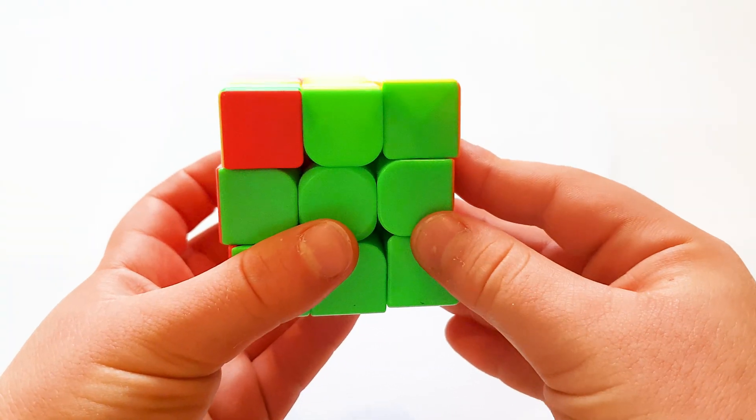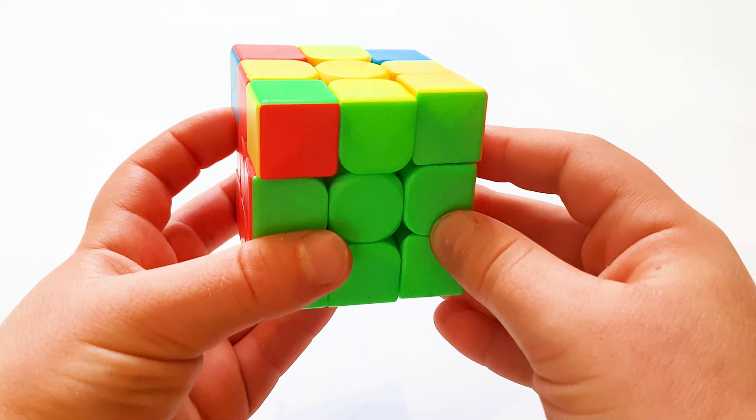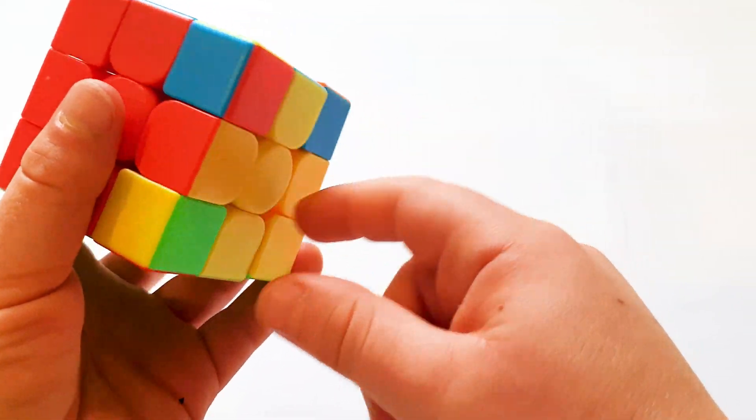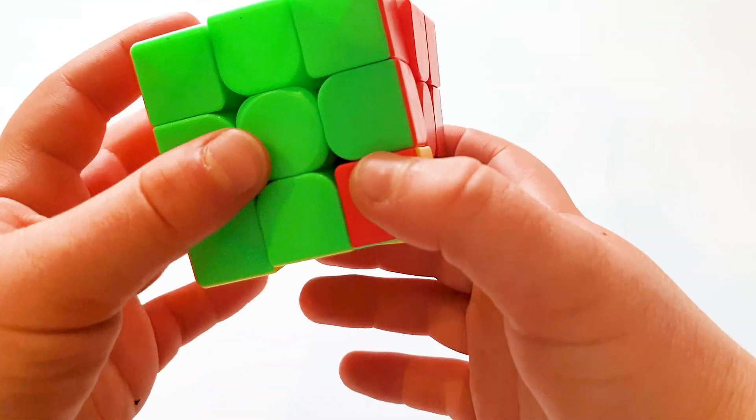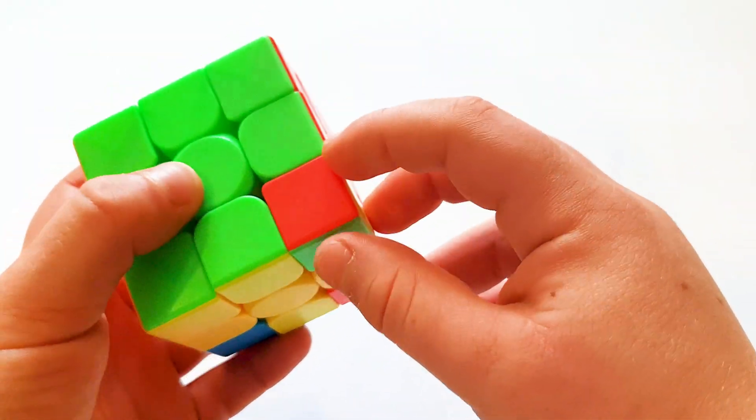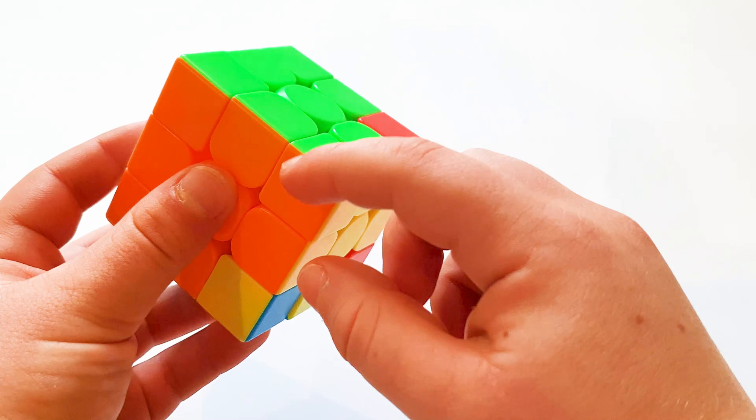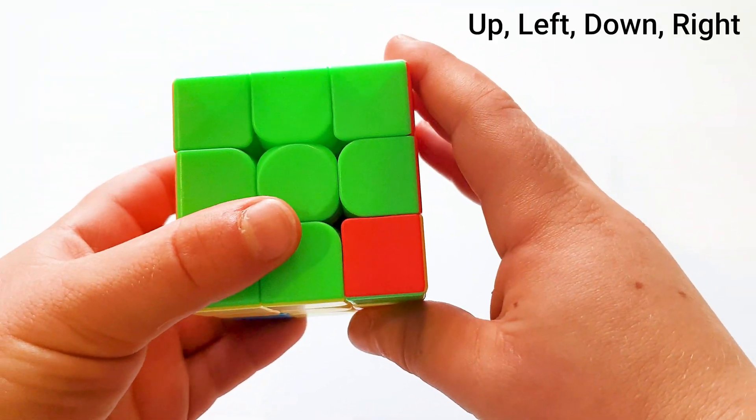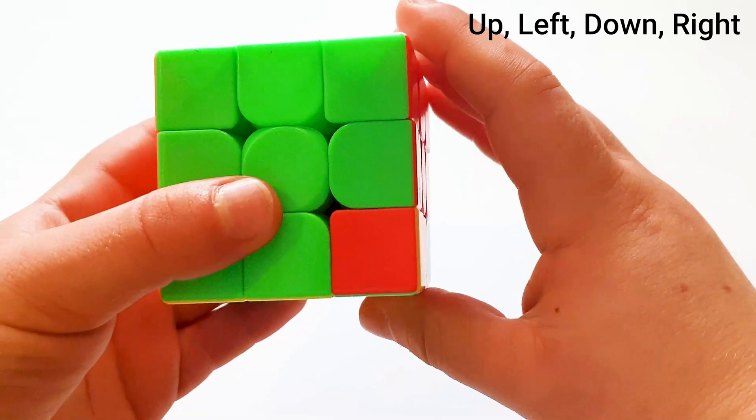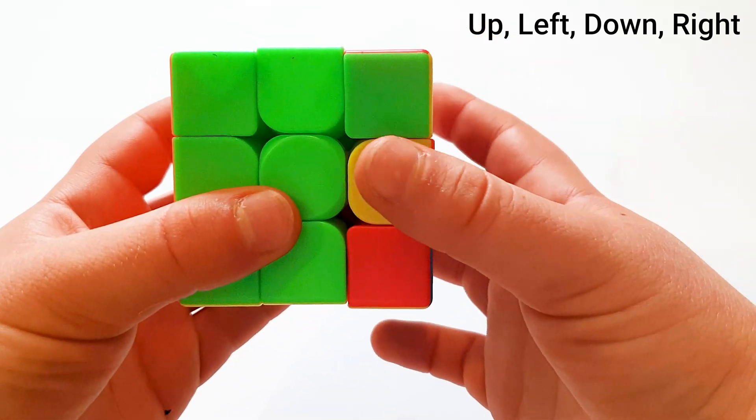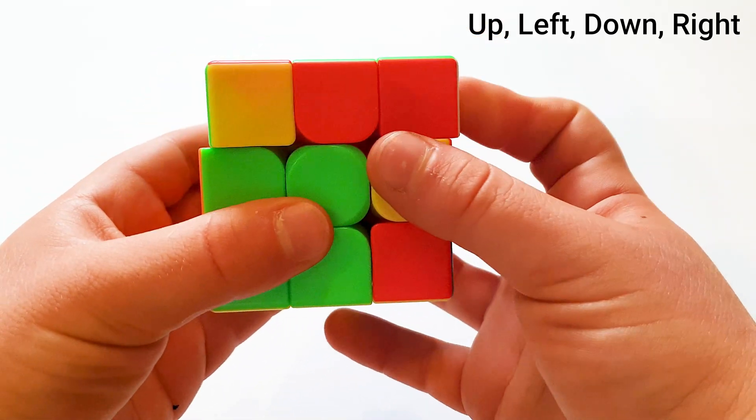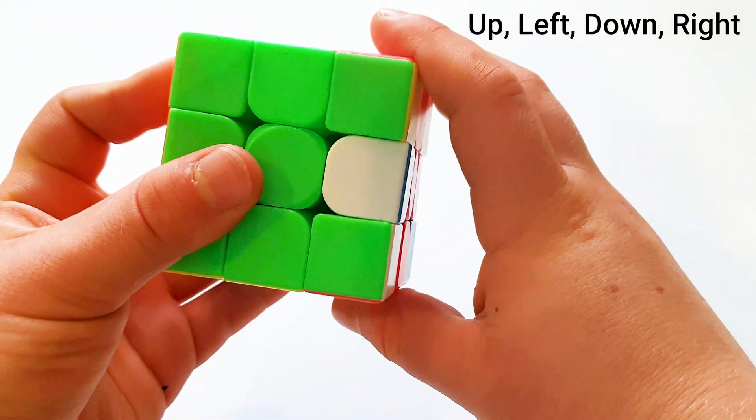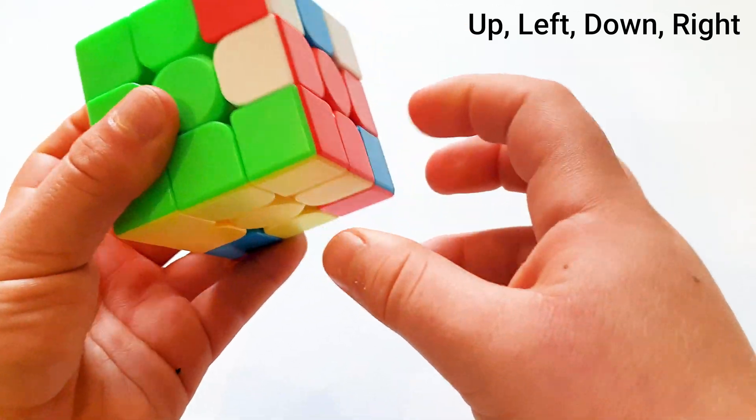In the final step, we are going to solve the whole cube. You turn it upside down so the yellow face is at the bottom. You start from one that isn't matching like this one is. And you do the algorithm that I taught you at the beginning: Right side up, top left, right side down, top right.